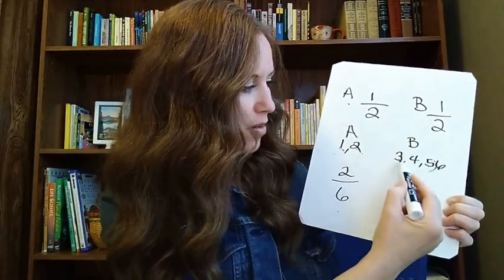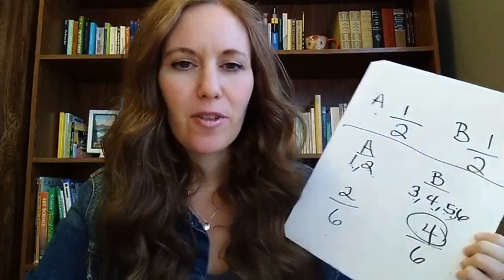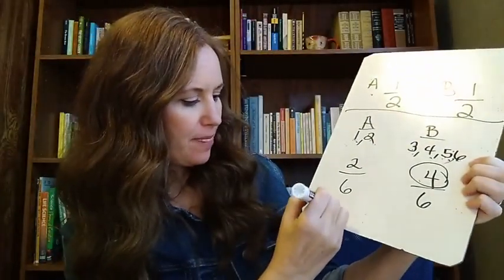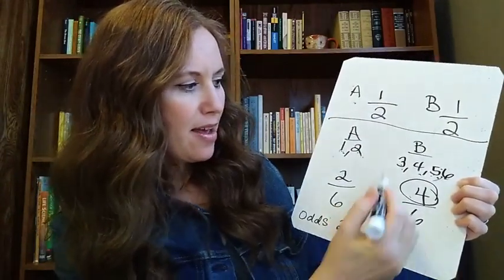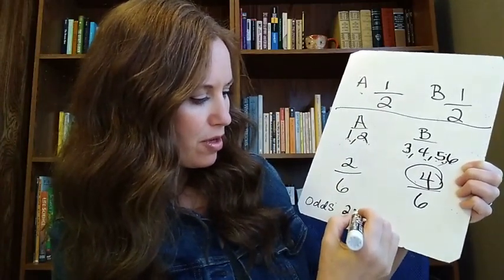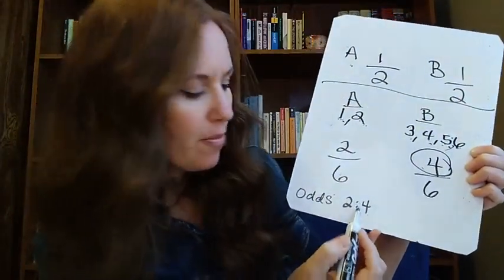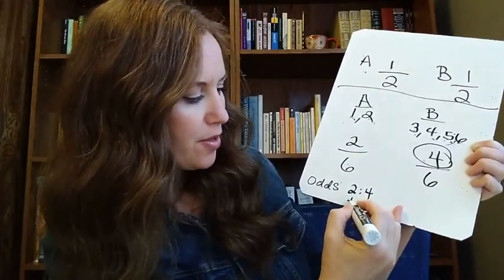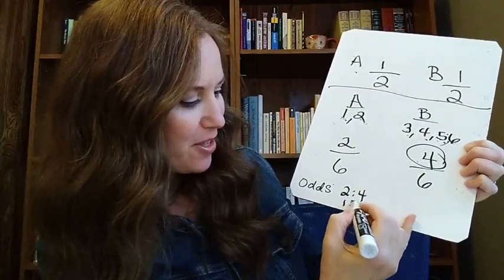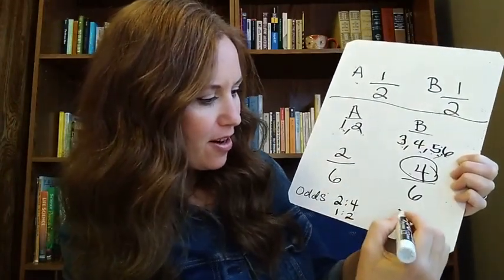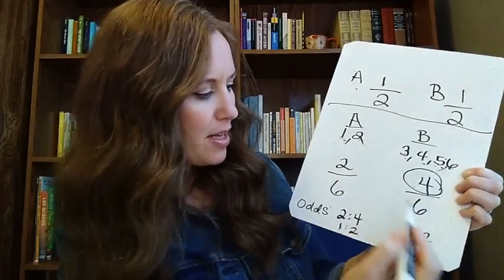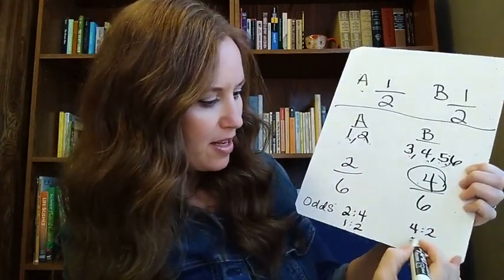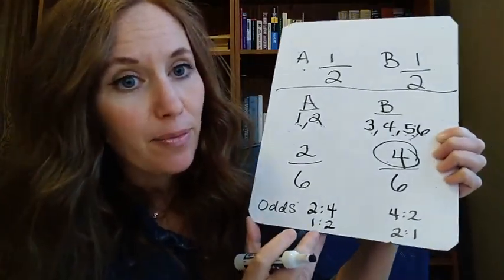What about team B? When we talk about odds, we're going to express it a little differently than we've been expressing probability. So for odds, team A has two for and four against — our odds are two to four. When we write the odds, we use a colon. Or if we reduce it, that's one to two. For team B, our odds would be four to two — four going for team B and two against — so the odds there would be two to one. And that's how we express odds.